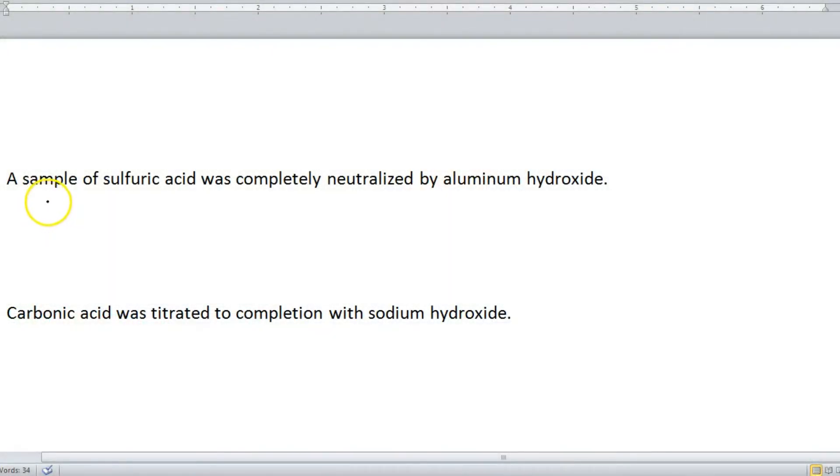Alright, so here we go with the neutralization reactions. Let's go ahead and take a look at this first example. It says, a sample of sulfuric acid was completely neutralized by aluminum hydroxide. Alright, so we have two compounds here. We have sulfuric acid and aluminum hydroxide, so let's start by writing their formulas.